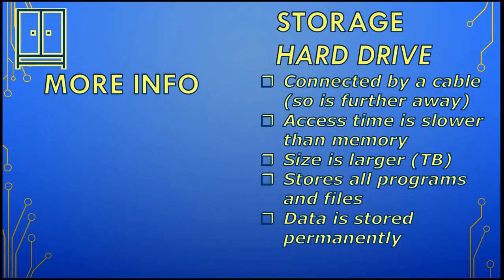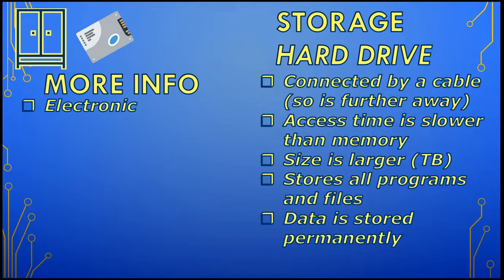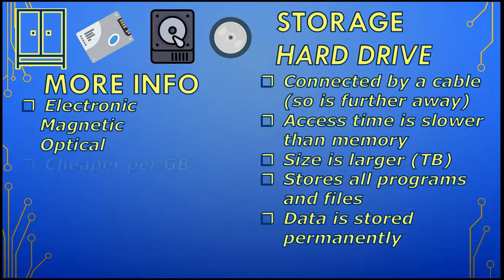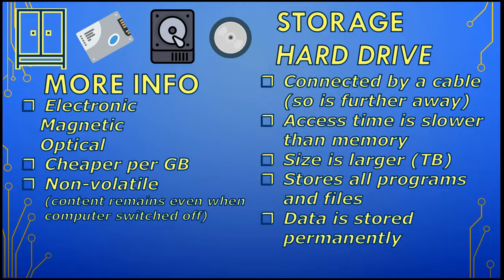Storage devices work in many different ways depending on the device. Flash drives and SSDs work electronically, while hard drives work magnetically, and CDs and DVDs use optical methods, which is like a laser. They are cheaper per gigabyte compared to memory.